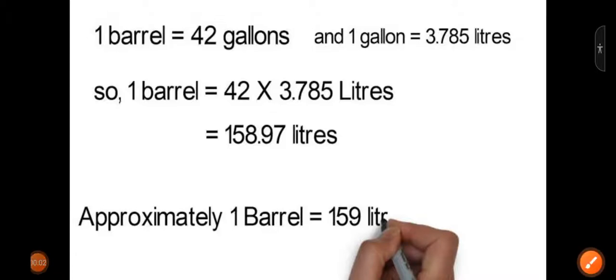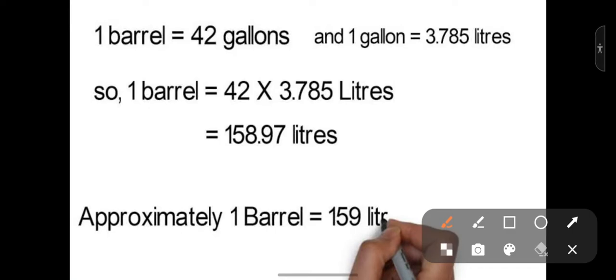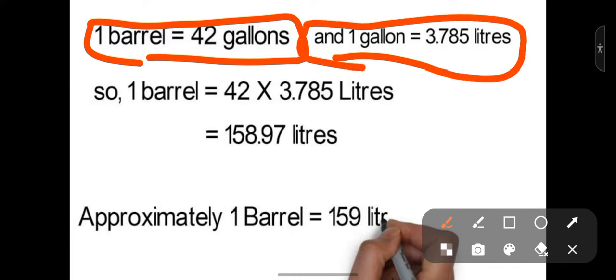Welcome to Bebel. In one barrel there are 42 gallons of oil. One gallon of oil is equal to 3.785 liters, so if we multiply 42 by 3.785...